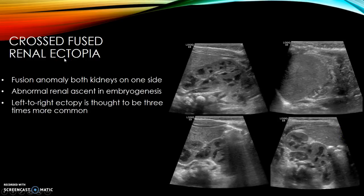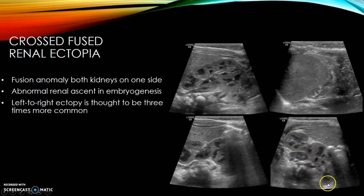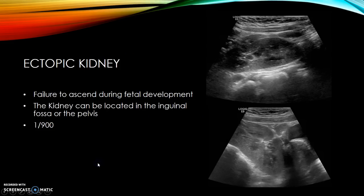Another fusion anomaly is crossed fused renal ectopia, where both kidneys are located on one side and are fused, sometimes forming an L-shape. On a sagittal view of the right side you see the right kidney with the left kidney jutting out from its lower pole. The left renal fossa is empty. On transverse you see the right kidney transversely and the left kidney more longitudinally, connected to it. Left-to-right ectopia is about three times more common, so you'll more commonly see it on the right side.